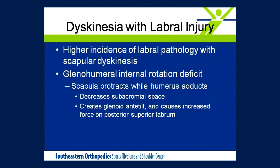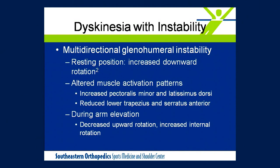In people we see with scapular dyskinesis, they are often at a higher risk for labral injury. This goes back to the glenohumeral internal rotation deficit — because of protraction, as the arm is being adducted across the body during a throwing motion, there's an increased amount of force on the posterior and superior labrum, setting it up for a risk of injury. Finally, with multidirectional instability, the resting position of the scapula is altered so that it's slightly downwardly rotated. There's also a change in muscle activation pattern — an increase in pec minor and lat activity, but a reduction in lower trapezius and serratus anterior activity. This really disrupts the force couples around the scapula, and during arm elevation we'll see a decrease in upward rotation and an increase in internal rotation.